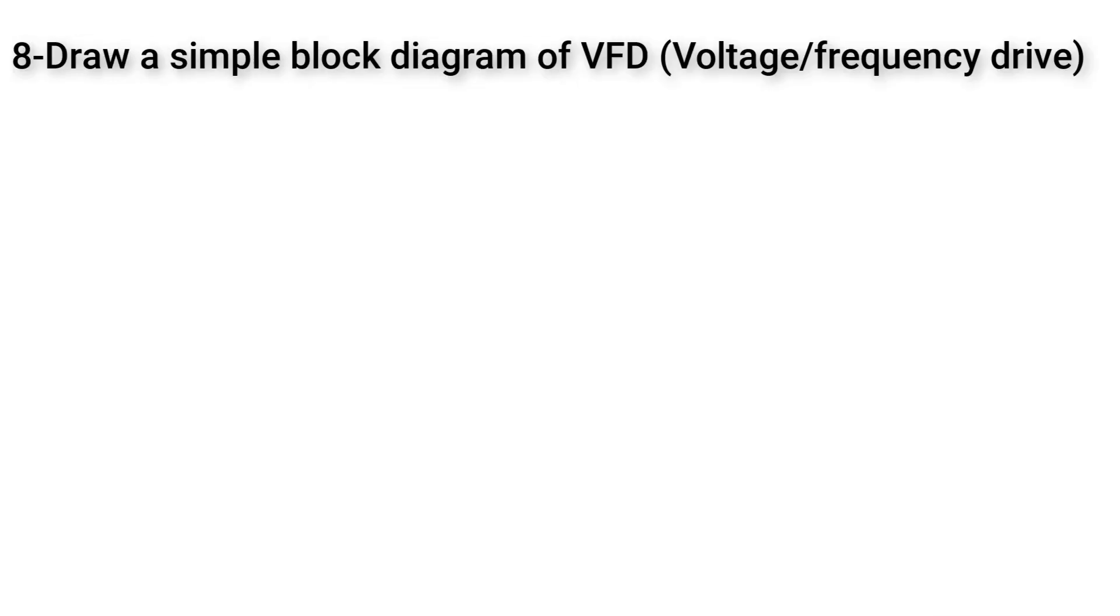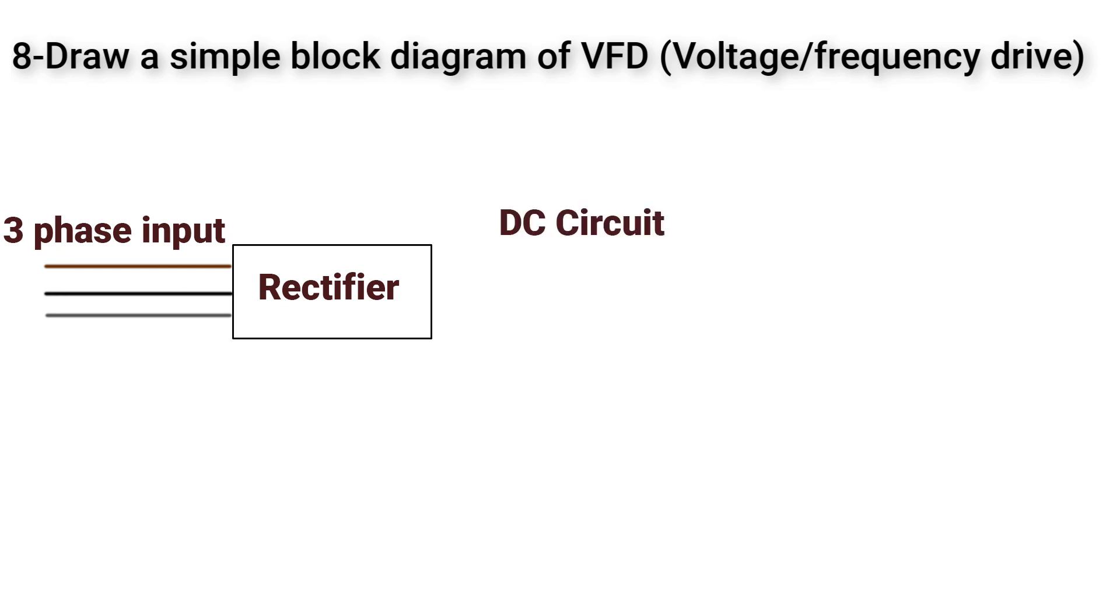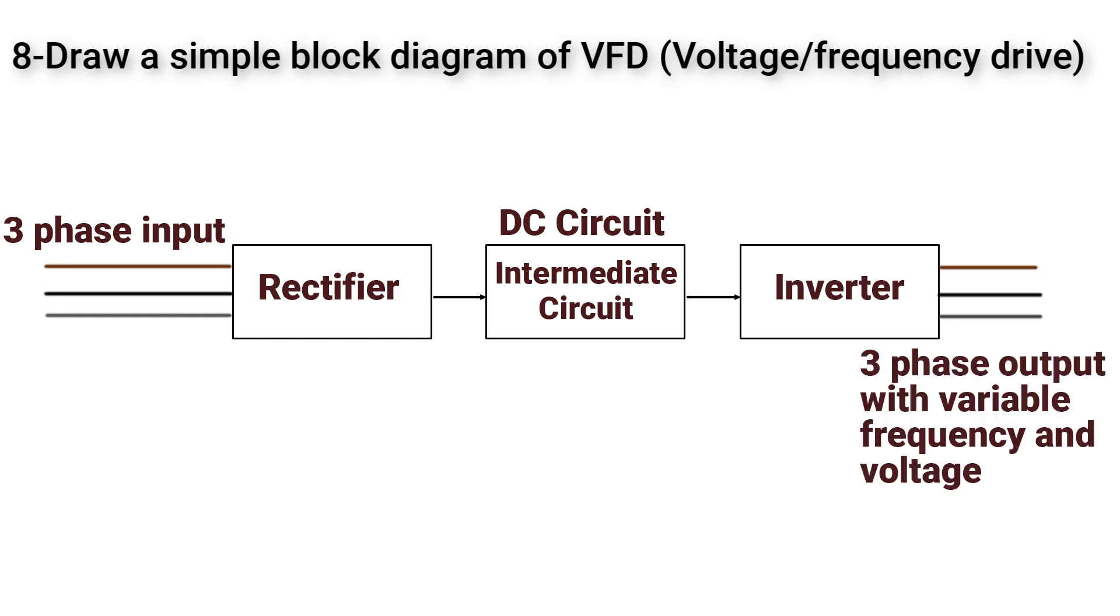The last question today is draw a simple block diagram of variable speed drive or voltage to frequency drive. We have three phase AC supply and we will connect it to a rectifier to convert it into DC. Then we have an intermediate circuit to handle the DC source. Then we have a three phase inverter to convert the DC into a three phase AC with variable voltage and variable frequency.